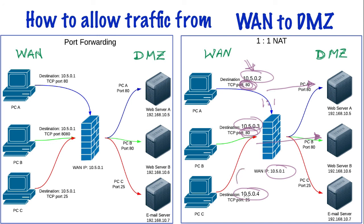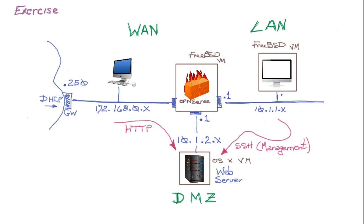SMTP traffic bound for 105.0.4 is directly directed to the email server. The address 105.0.1 is reserved for allowing remote management of either the security appliance or internal LAN machines, or usually some type of VPN connection — that's the best way to get into your internal LAN. In the next series of tutorials I'll show some typical uses of a DMZ using both port forwarding and 1-to-1 NAT functions.